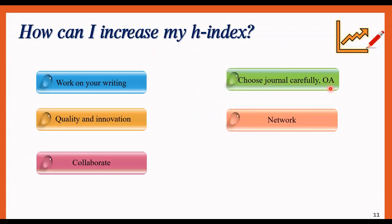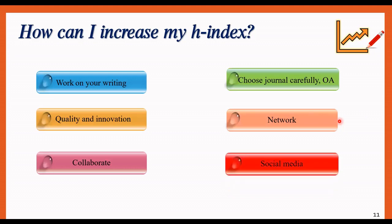Fifth one is network. Network is so important because attending conferences and meetings whenever you can will help you to promote your work and find new collaborators. Try to make some networks and connections. And as the last one, social media—thinking about writing a blog about your work or being present on social media, such as LinkedIn, such as ResearchGate. It will also help you to connect with others in your field of study. These are all about items that can help you to increase your H-index. Consider them and use them.